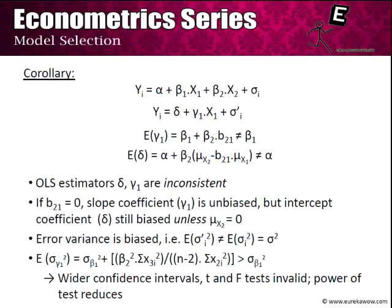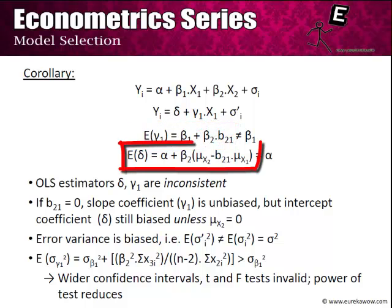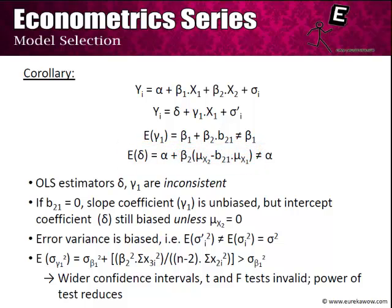This has several corollaries. The first is that since the OLS estimators delta and gamma1 are not unbiased, they are also inconsistent. An estimator that is biased is also inconsistent, but the vice versa is not true. Also note that even if x1 and x2 are not correlated — that is, b21 = 0 — then gamma1 is unbiased, but the intercept delta will still be biased unless the mean of x2 is also zero, because the entire effect of x2 shows up in the intercept coefficient delta.